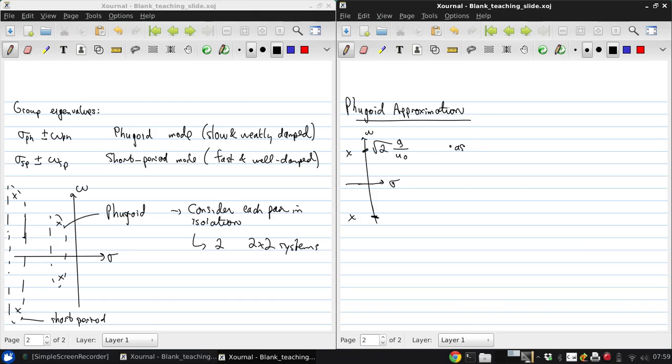We assume for the Fugoid pitch equilibrium, so this means delta M is zero. That means delta Q is approximately zero and delta Q dot is approximately zero. So the aircraft remains trimmed in pitch. That means the angle of attack does not change.